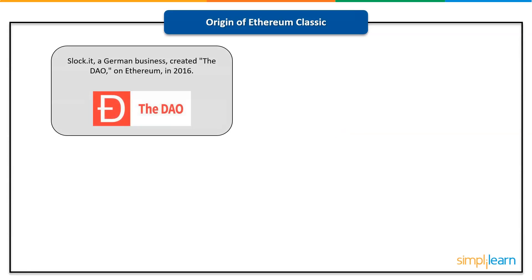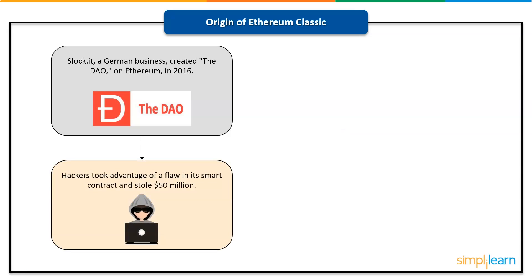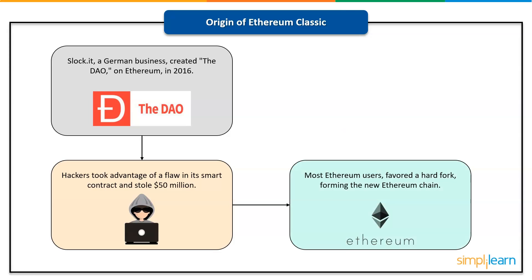Slock.it, a German business, created the DAO, a Decentralized Autonomous Organization initiative on Ethereum in 2016. While the project earned over $150 million through crowdfunding, hackers took advantage of a flaw in its smart contract and stole $50 million. Most Ethereum users, including creators Vitalik Buterin and Gavin Wood, favored a hard fork — a major modification in the blockchain's underlying protocol — to recover the assets, resulting in the formation of the new Ethereum chain.